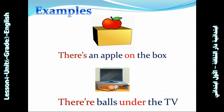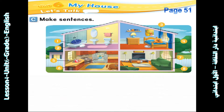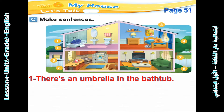Now let's begin our lesson on page 51, Activity C: Make sentences. This picture is about a house. Number one — you can describe picture number one: There is an umbrella on the bus stop.